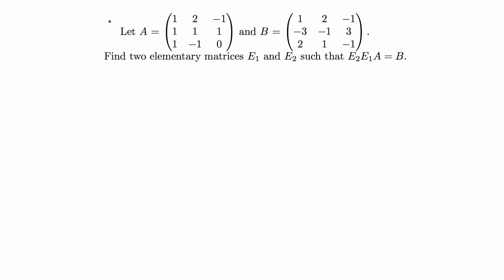Hey guys, in this video I'm going to do this linear algebra problem. It says let A be this 3x3 matrix and B be another 3x3 matrix. Find two elementary matrices E1 and E2 such that E2 times E1 times A equals the matrix B.